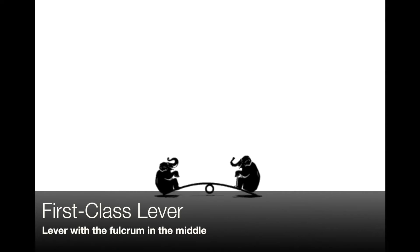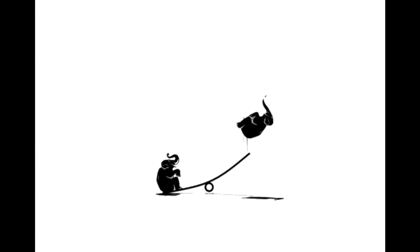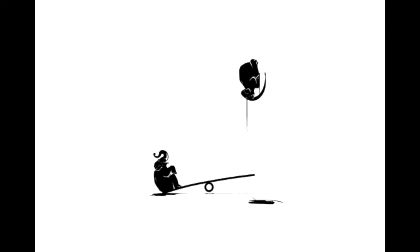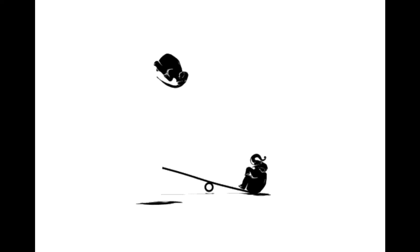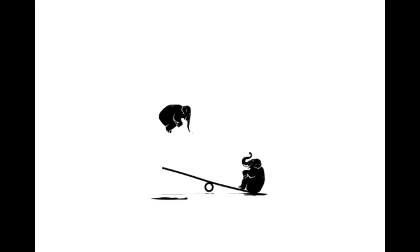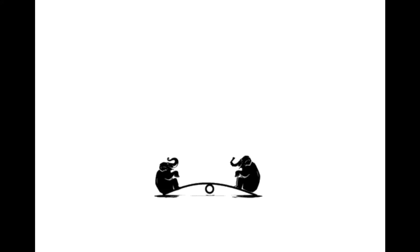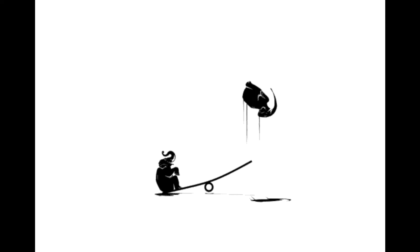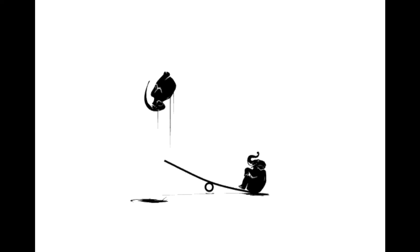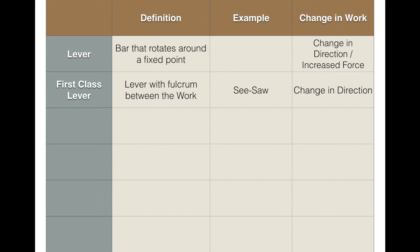A good example of a first class lever is a seesaw. With our elephants here, you have the input force of the elephant going down, and once it goes down, the other elephant goes up. What stays in the same place is the fixed point — the fulcrum — that's what it pivots on. The fulcrum is between the input and the output. A seesaw is a great example, and it changes the direction of the work.